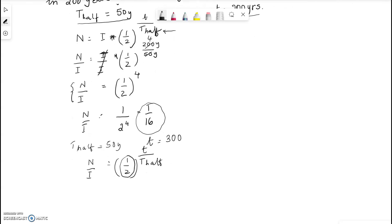So now the fraction of it that remains is N over I. So N over I is equal to half to the power of t which is 300 over t half which is 50 years. 50 goes 6 times into 300 because each 100 contains two 50s. So 50 goes 6 times into 300. So this is equal to one half to the sixth power which is the same as 1 to the sixth power which is really 1 and 2 to the sixth power which is, let's see, it is 64.